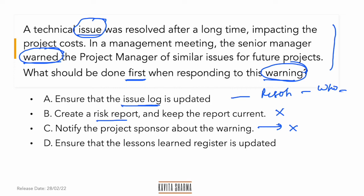'Ensure that the lessons learned register is updated' — yes, this is also something you need to do. But the question asks what is the first thing you would do. The issue log becomes the lessons learned as well — it goes to the OPA. The lessons learned register can be updated as and when the retrospective meeting happens or whenever your team gets time.